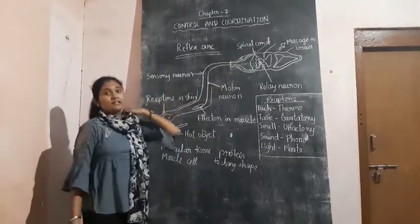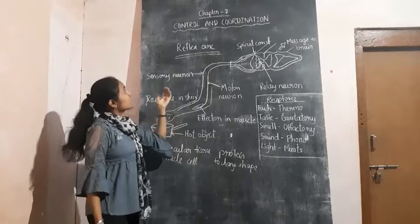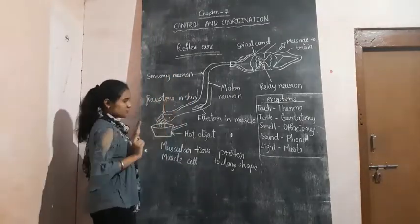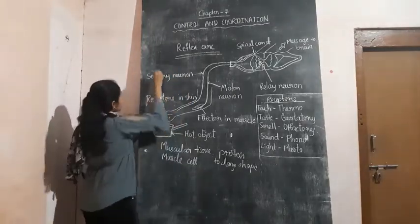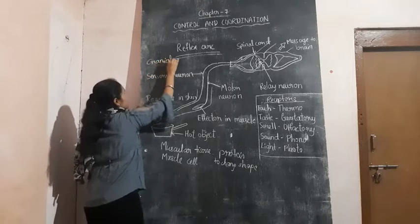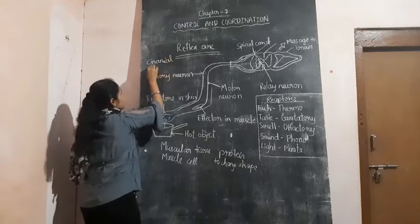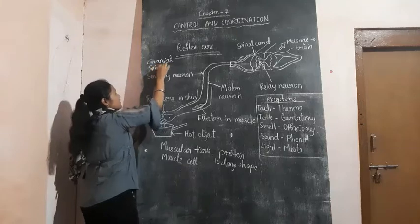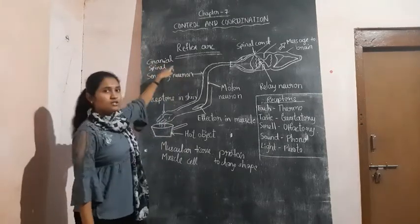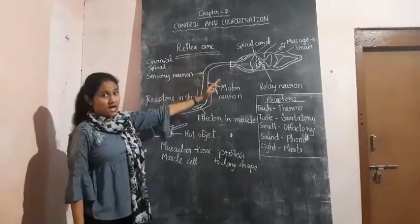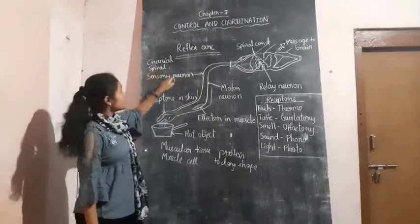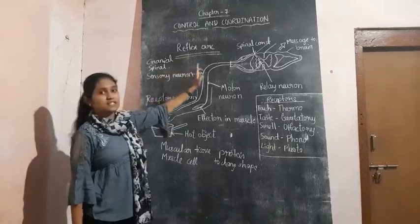That is known as cranial reflex arc — this is just for your additional information. If the reflex arc includes the brain, then it is known as cranial reflex arc. If it includes the spinal cord, then it is known as spinal reflex arc.